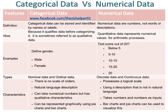Characteristics of categorical data include: there is no scale of orders, natural language descriptions can take numerical numbers but have qualitative characteristics, and can be represented graphically using pie charts and bar charts.